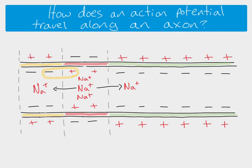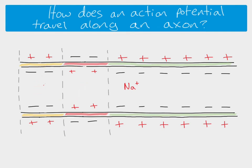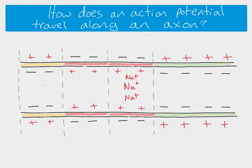Even if sodium moves back due to the local circuit, it might depolarize that membrane slightly, but it will not allow more sodium ions to come in, and therefore cannot change the voltage enough to generate an action potential. This means the action potential can only travel forward — because in the forward section the sodium causes voltage-gated channels to open, more sodium ions move in, and an action potential is generated there instead.